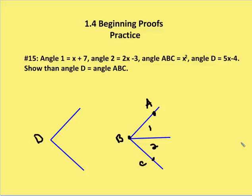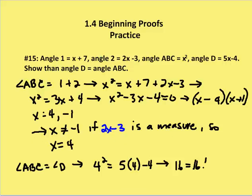So I can rewrite this as x squared is equal to, or ABC is equal to angle 1 plus angle 2. So let's do that on another page.